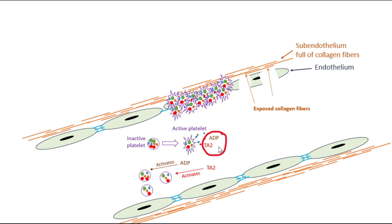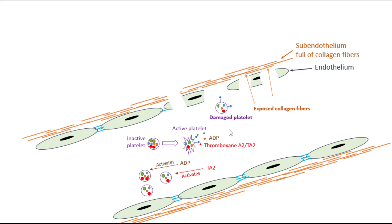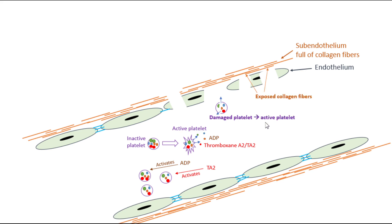Next, we consider what happens if a platelet's membrane is damaged. For example, at the moment of trauma to the wall of the blood vessel, some platelets in that spot may get damaged. When the membrane of a platelet is damaged, it starts releasing its chemicals out. We can therefore consider a damaged platelet an active platelet, since it releases many chemicals involved in platelet plug formation and blood clot formation.